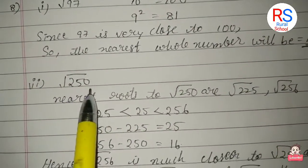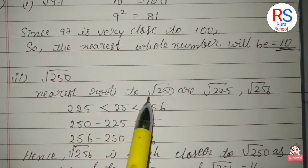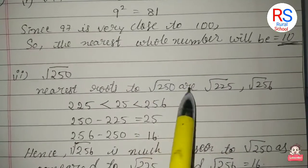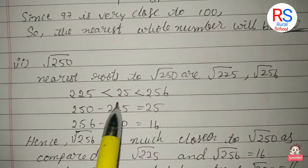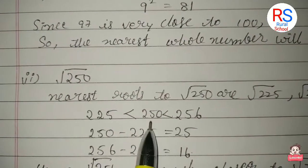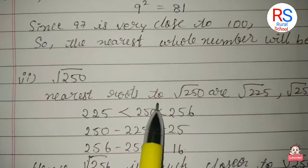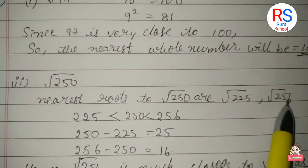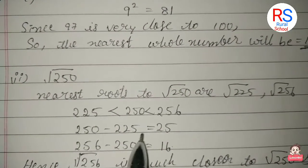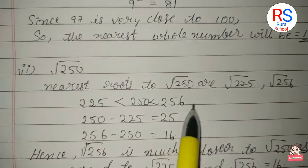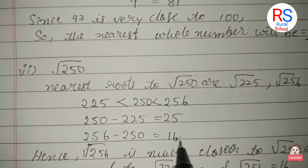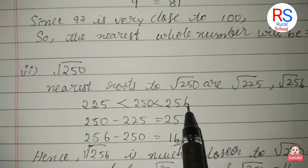Next, second one: √250. In the same way, the nearest roots to √250 are 225 and 256. 15² = 225 and 16² = 256. So we have 225, 250, and 256. The difference: 250 - 225 = 25, and 256 - 250 = 6.